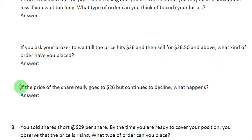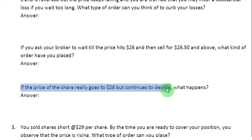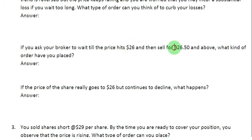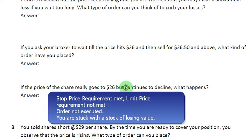The next part of the question is: if the price of the share really goes to $26, hitting the stop price level, but then rather than rising it continues to decline, what is going to happen? Once the stock price hits $26, one requirement is met, but the second requirement you specified is that the share should be sold for a price at or above $26.50. If the price continues to decline instead, your stop limit order is not going to be executed, and you will find yourself stuck with a share that is continuing to lose value.